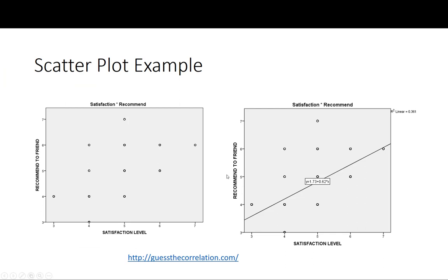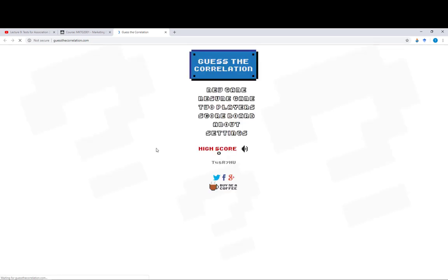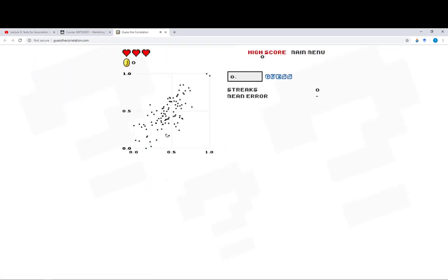Here we have again the two different types of scatter plots and I've also included a link here that is a fun game of guessing the correlation statistic based on a sample of scatter plots. To give you a taste of what this looks like and how difficult it is, we start a new game. It shows you a scatter plot and these are all positively related.